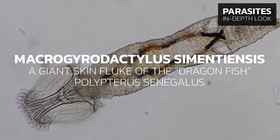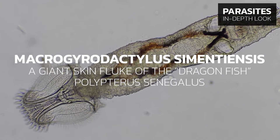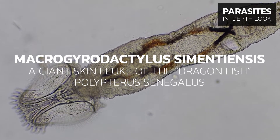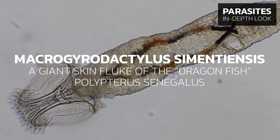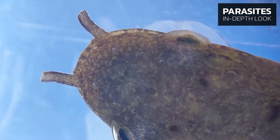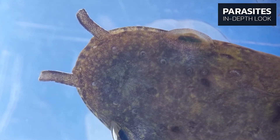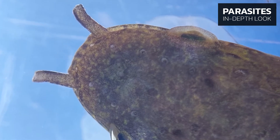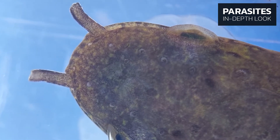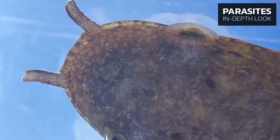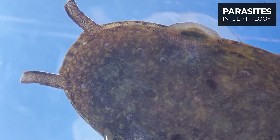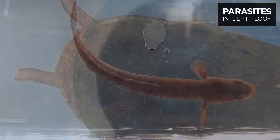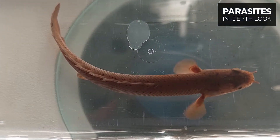Macrogyrodactylus simensiensis is a giant skin fluke of the dragonfish Polypterus senegalus. Members of the genus Macrogyrodactylus are among the largest parasitic skin flukes in the world, and are found on African fish species. Macrogyrodactylus parasitizes the prehistoric dragonfish Polypterus senegalus.